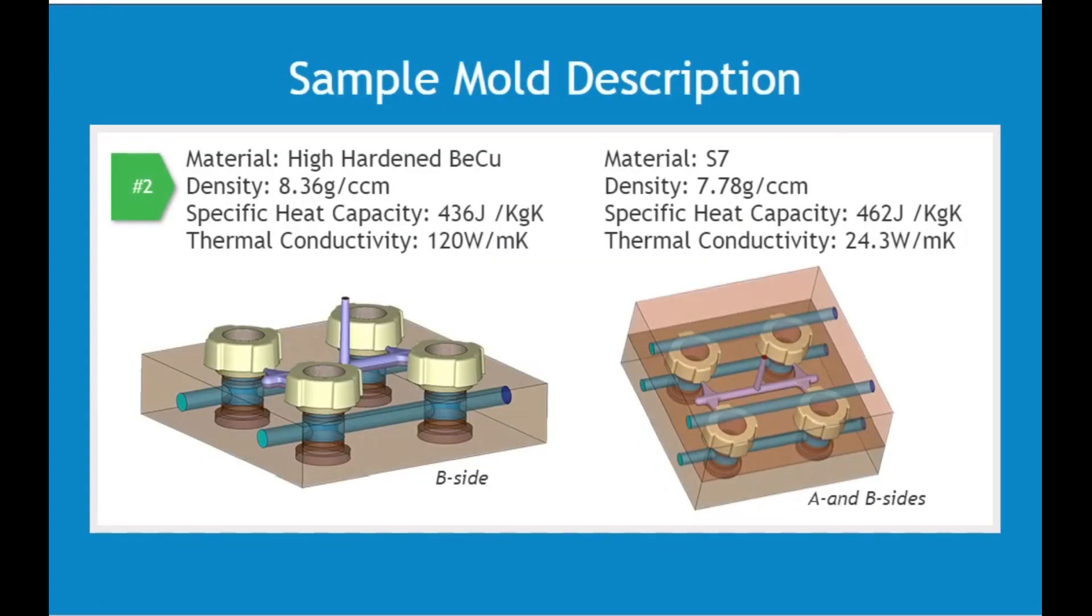The next series of simulations will incorporate a high-hardened and high-conductive beryllium-copper alloy for the entire movable mold base. The core steel is now S7. Let's look at the temperature behavior with this change.